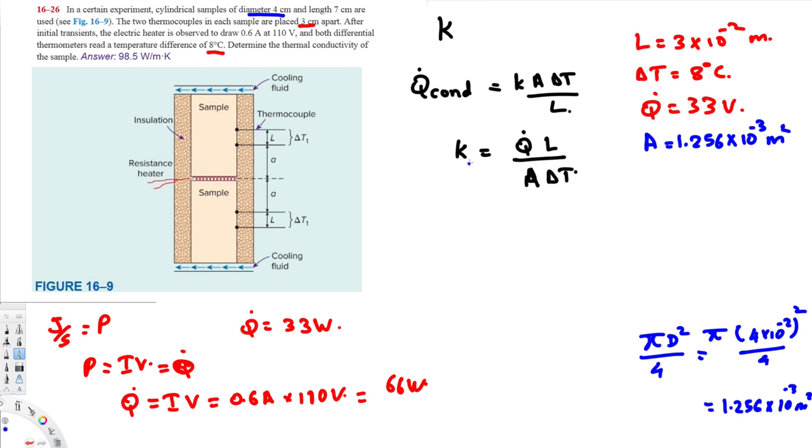Now let's go ahead and calculate K value. K is going to be equal to Q̇, that is 33, times the length, that is 3 times 10 to the power of minus 2, and then we have the area, that is 1.256 times 10 to the power of minus 3, times the temperature difference, that's 8. And if you calculate this one, that should give you 98.52 watts per meter Kelvin. And that's going to be the final answer. I hope you guys find this video helpful. See you next time.